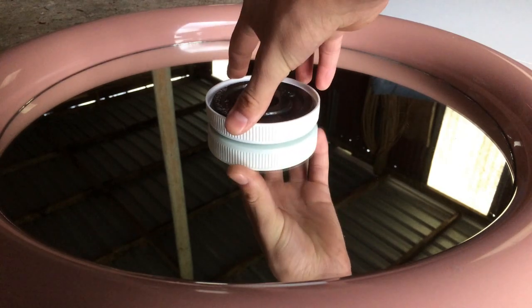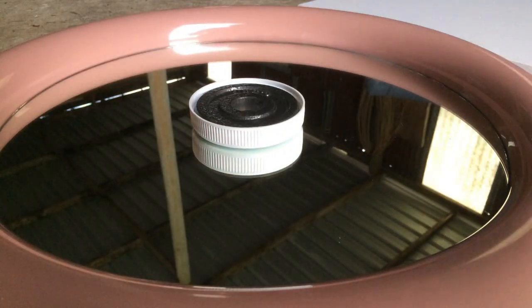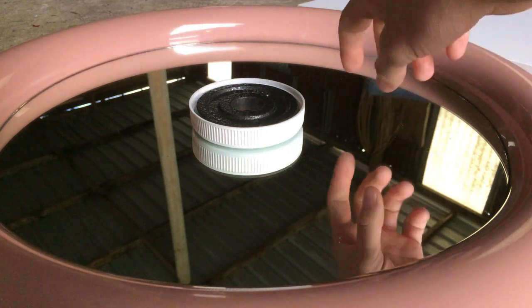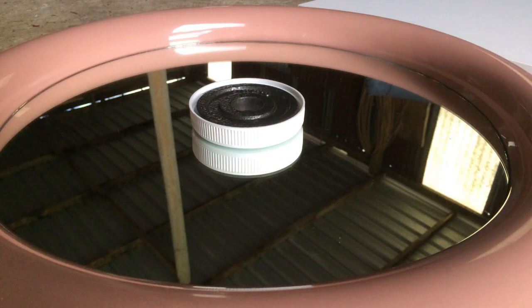But also how exactly does an Euler's disc work? Take for instance a coin. Anyone's done this, you get a coin, you spin it on a surface and you know it eventually stops.